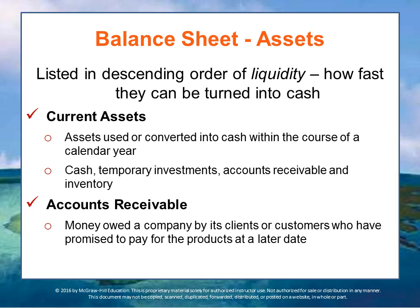All asset accounts are listed in descending order of their liquidity, meaning how fast you could turn them into cash. Current assets, also called short-term assets, can be used or converted into cash within the course of the current calendar year. Cash is followed by temporary investments, which means you might have some money in a CD at the bank, or some stocks that you could sell if you need to.